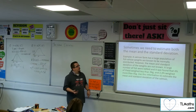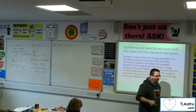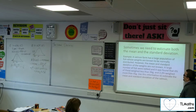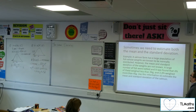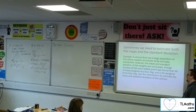So we're going to look at this example, and you've got a copy of the example on your sheet. A salmon farm has a large population of fish whose weights are known to be normally distributed. However, the mean and standard deviation of the weights are not known. A large number of fish were netted, and it was found that 4% of these weighed less than 3 kilos, and 2.3% weighed more than 6 kilos. Use this information to estimate the mean and standard deviation of the salmon.